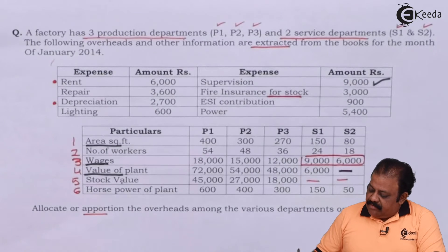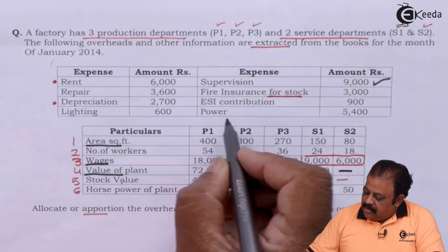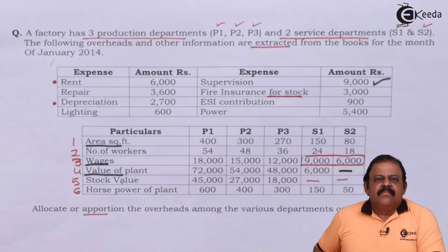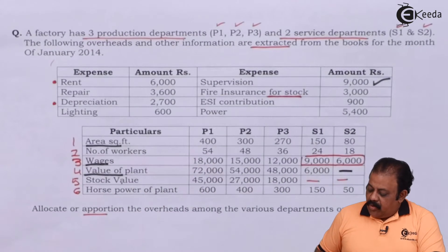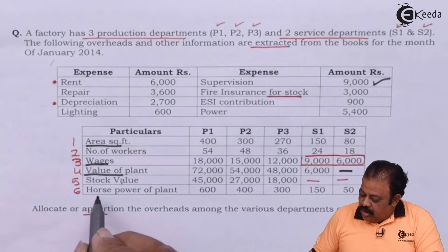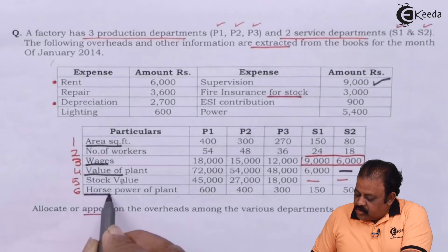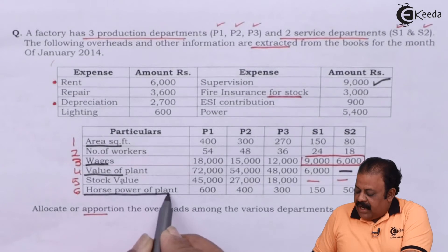Power of 5400 will be allocated in the ratio of horsepower of plant.